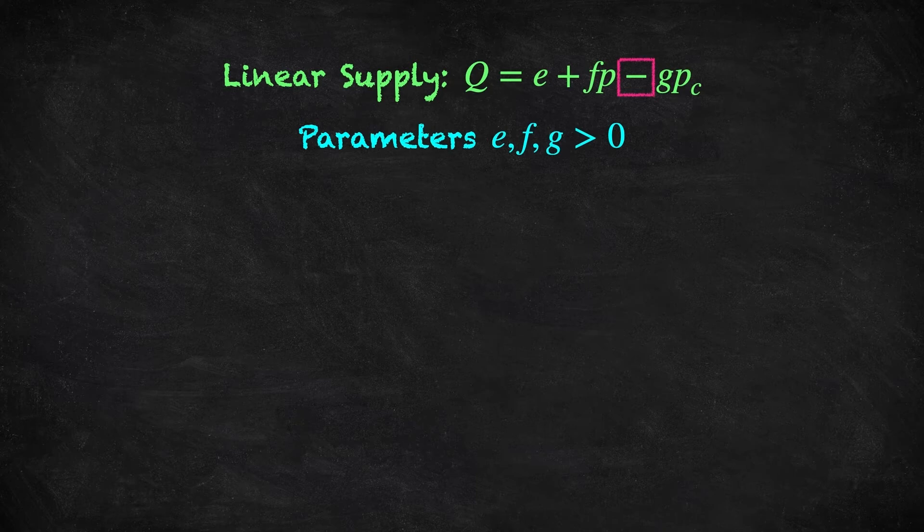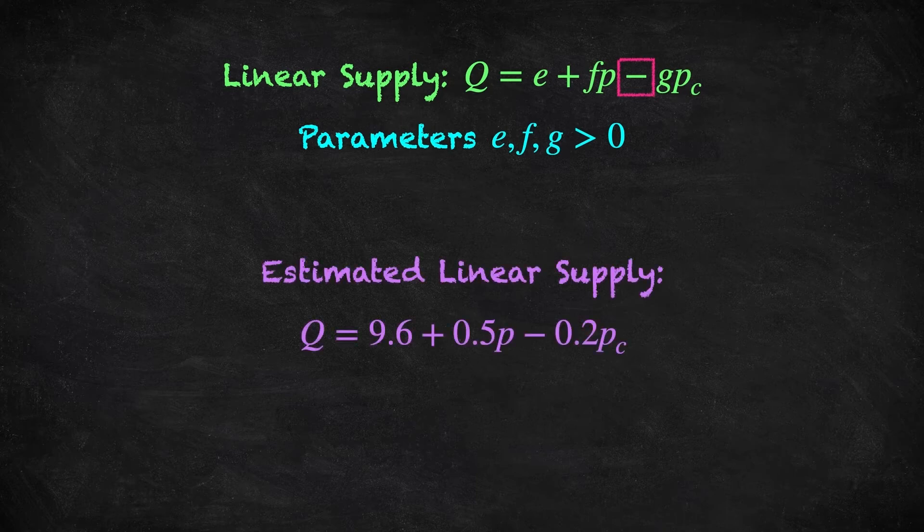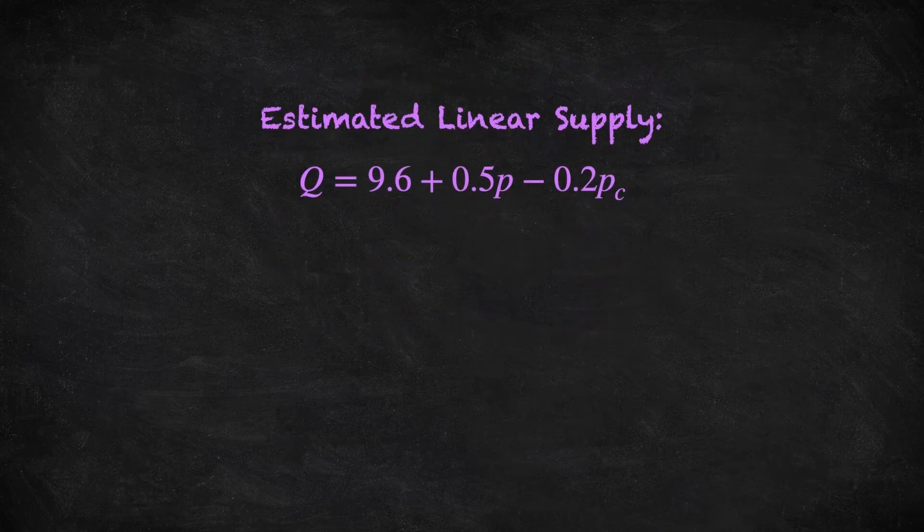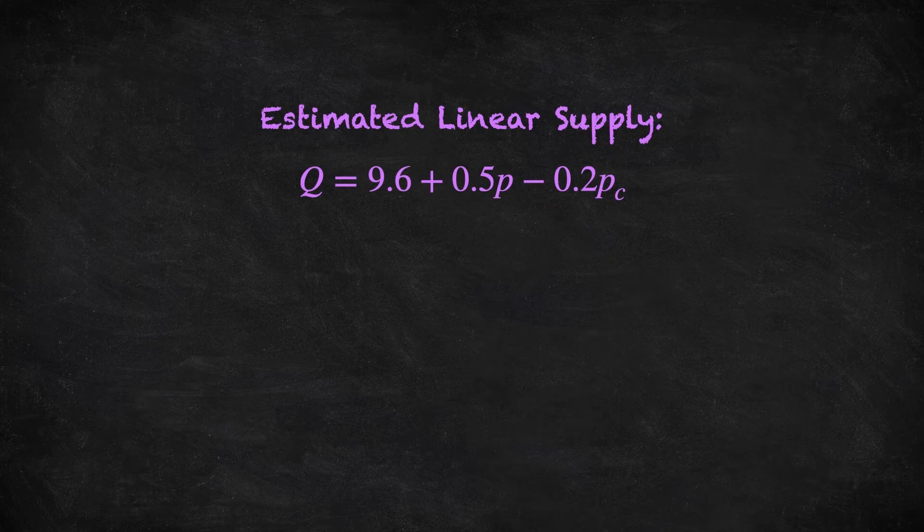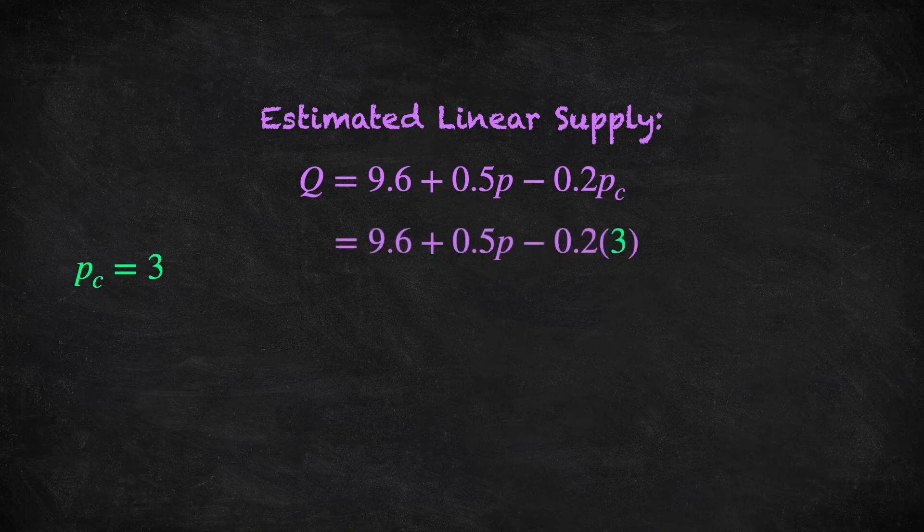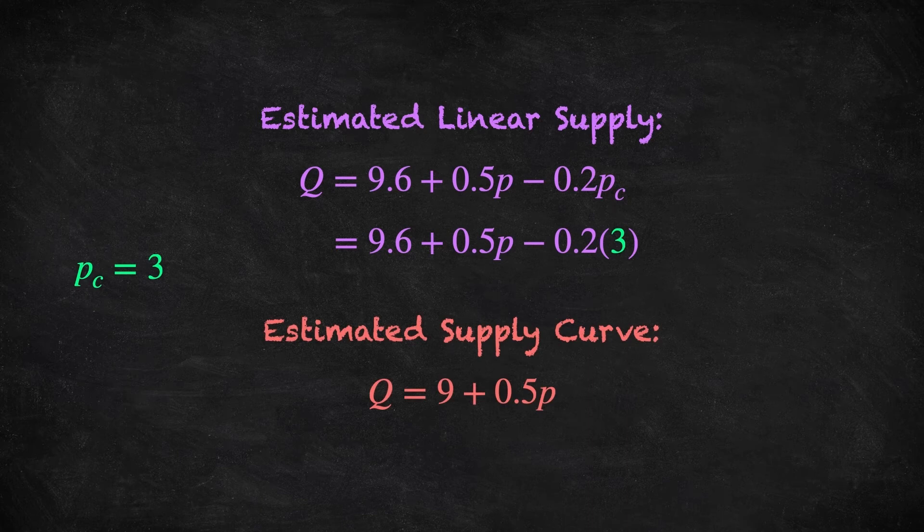The parameters of this linear supply function can be estimated using econometric techniques. Suppose that we've done this, and the estimated linear supply function is Q equals 9.6 plus 0.5 times the price minus 0.2 times the price of cocoa. If we're going to represent this supply function graphically, I suppose we could draw a three-dimensional diagram, but let's use the same idea that we used when drawing demand functions. We'll assume that the price of cocoa is fixed at a particular level, in this case three dollars. Then you can calculate that the supply function is equal to Q equals 9 plus 0.5 times the price of coffee.